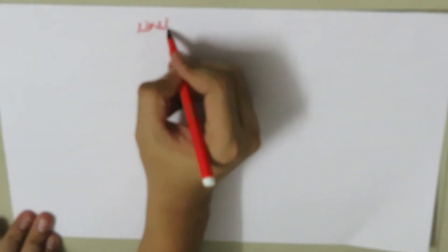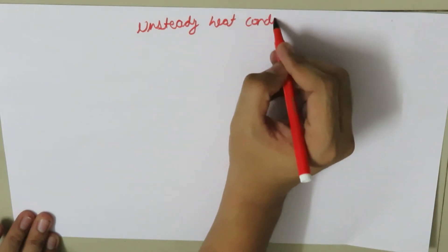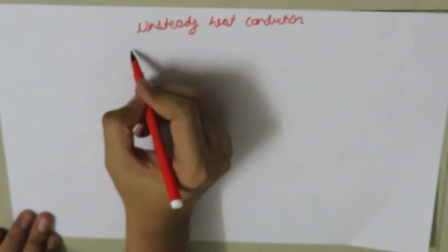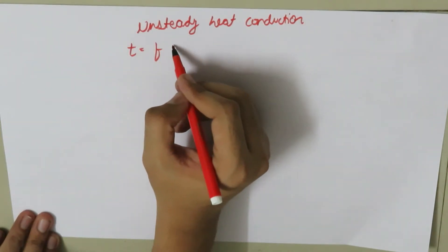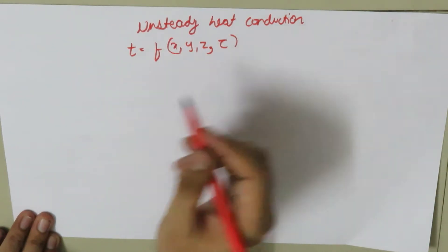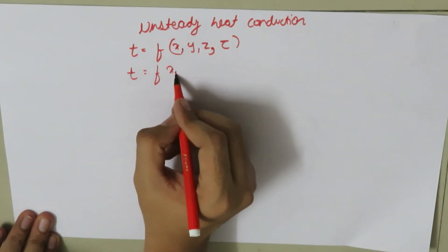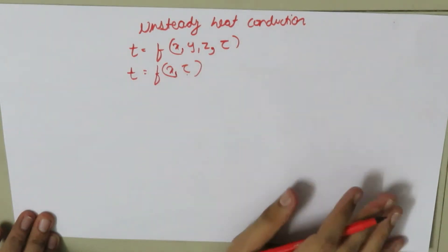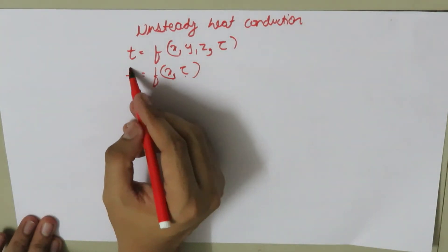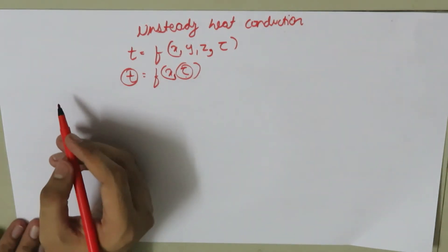Today we are going to study the concept of unsteady heat conduction. In this case, the temperature T is a function of x, y, z directions and time τ. Here we are dealing with only one direction, so temperature is a function of only x direction and time τ. Note that for temperature I am using small t, and for time I am using τ.